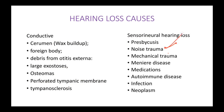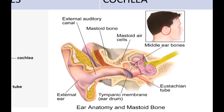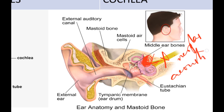Other causes include noise trauma — whenever you expose your nerves to excessive stimuli they become damaged — as well as mechanical trauma. Meniere's disease involves a buildup of endolymph which sits on and compresses the eighth cranial nerve, damaging it.